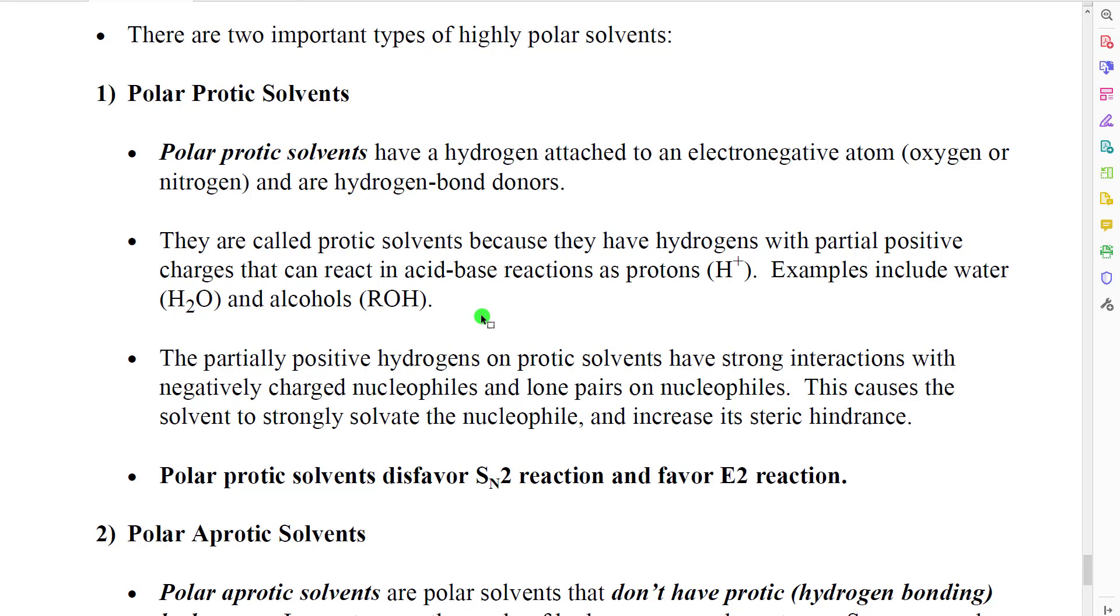What we see is that the partially positive hydrogens on protic solvents will strongly interact with negatively charged nucleophiles and the lone pairs on those nucleophiles. This is going to cause strong solvation of the nucleophile and increase its steric hindrance. As a consequence, what we see is polar protic solvents disfavor SN2 reaction and they favor E2 reaction because, as we mentioned, when we have aggressive nucleophiles, they will prefer to do bimolecular reaction. If SN2 is not available, they will force E2 to occur instead.